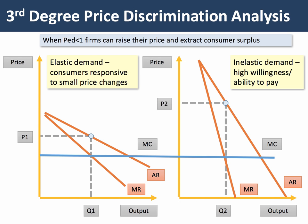Here's a theoretical diagram showing an example of third-degree price discrimination. Consumers on the left-hand side have a more price elastic demand — in other words they're responsive to small price changes — and typically a firm would cut the price for those consumers to P1, compared to the higher price P2 on the right-hand side, where demand is more inelastic and consumers have a greater willingness and ability to pay. We're assuming here the marginal cost of supply is the same to both markets, so the price is above marginal cost in both cases. The lower the elasticity of demand, the higher the price that can be charged.